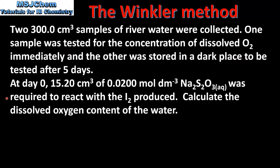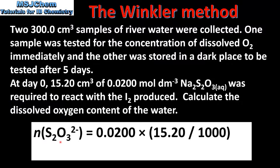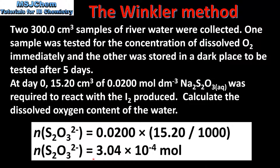Calculate the dissolved oxygen content of the water. To do this we use the equation n = CV, where C is the concentration of the sodium thiosulfate solution and V is the volume used in dm³. The concentration was 0.02 mol per dm³, and the volume used was 15.20 cm³, converted to dm³. Multiplying these together gives 3.04 × 10⁻⁴ moles.